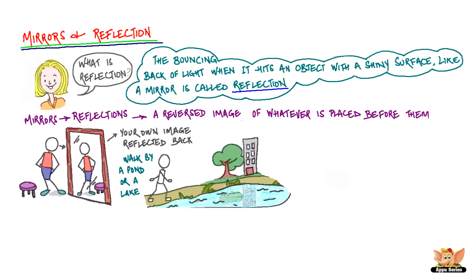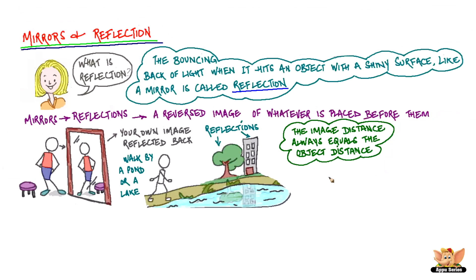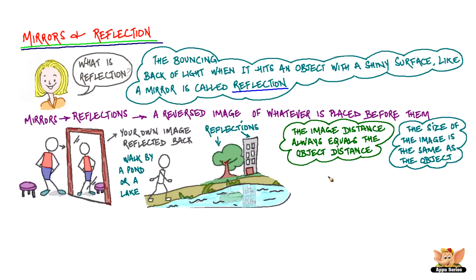Take a walk by a pond or a lake and you will see reflections of trees, buildings and other objects in the water. The image distance always equals the object distance, and the size of the image is the same as the object — that means the mirror does not magnify the image.